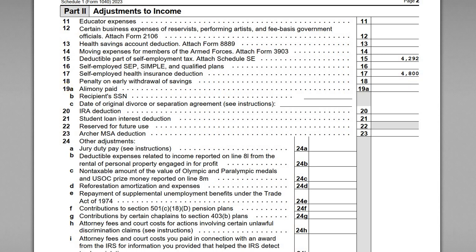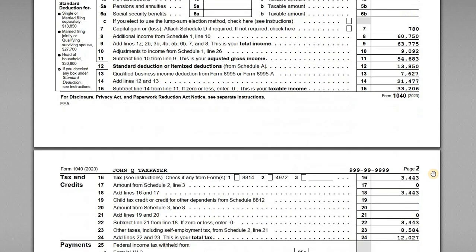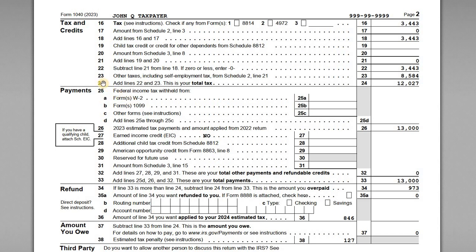Once all the totals come together, on Schedule 1 line 8 we have John's net earnings from Schedule C: $60,750. The adjustments from the self-employed health insurance deduction and the deduction for one half of SE taxes are reported on line 10. The actual self-employment tax of $8,584 is reported on line 23 — other taxes including SE tax from Schedule 2 line 21. That covers it for this tutorial.